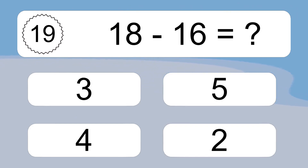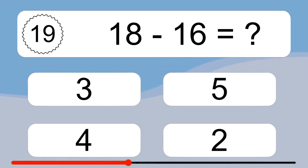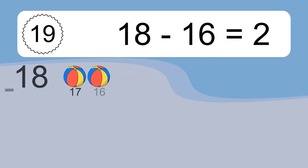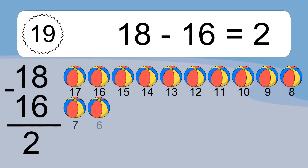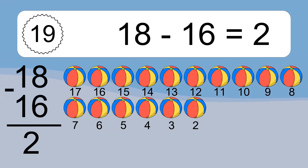18 minus 16 equals what? 18 minus 16 equals 2. Let's count it: 17, 16, 15, 14, 13, 12, 11, 10, 9, 8, 7, 6, 5, 4, 3.